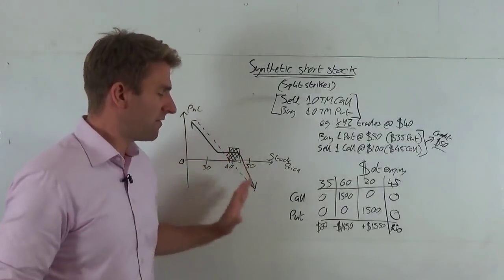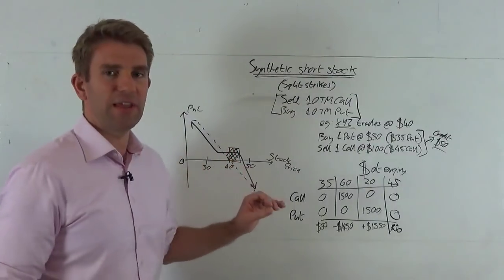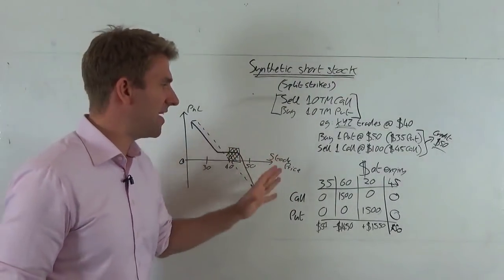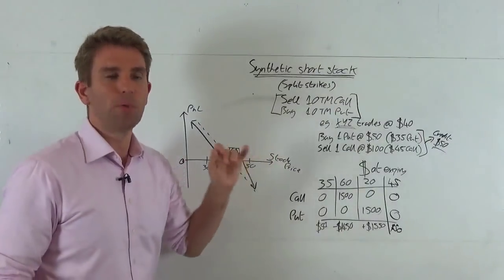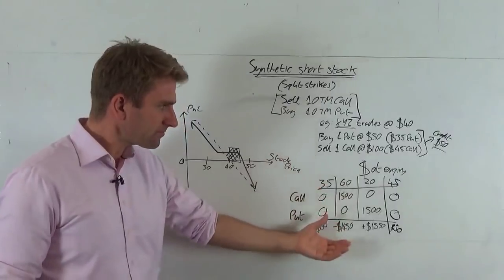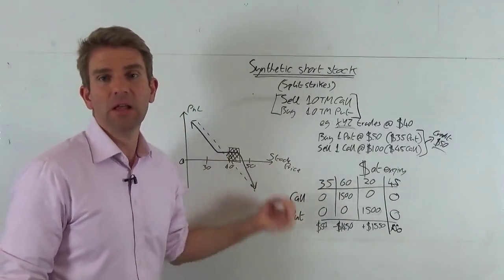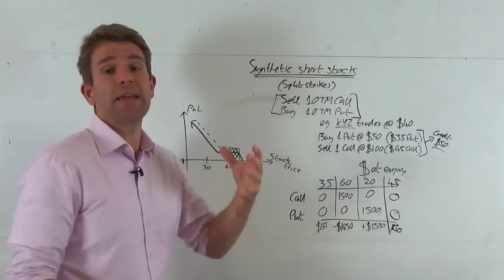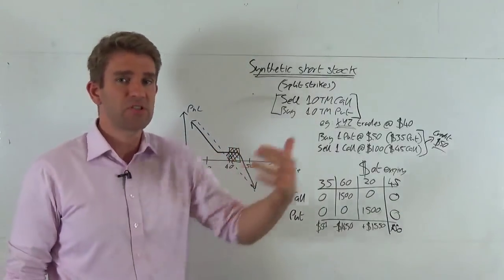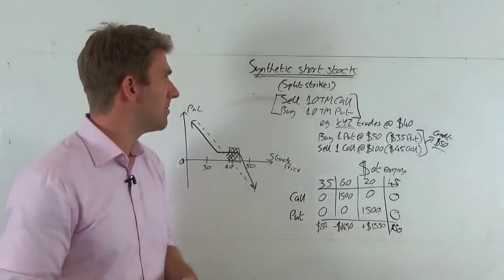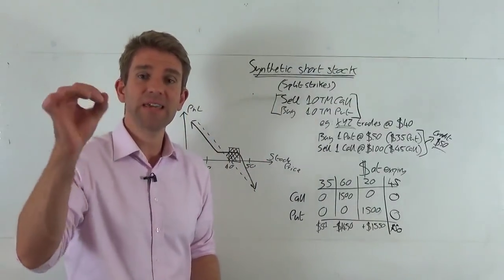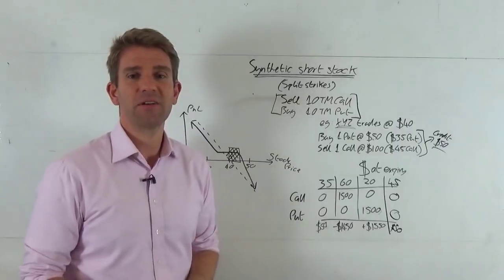So that's something you'd structure if you think you might be a little bit wrong — you'd rather have this than a naked short. But if you're really right on the deal, you make far less. It's a commercial decision depending on your hypothesis and what you're trying to express in the markets. Anyway, that's a synthetic short stock position using split strikes. Take care, whatever you're doing in the markets. Goodbye.